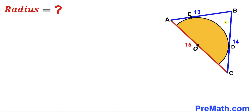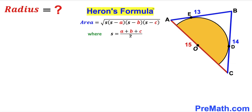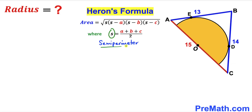Let's focus on triangle ABC. Since all its side lengths have been given to us, we are going to use Heron's formula to calculate the area of triangle ABC. Heron's formula states: area equals the square root of S times (S minus a) times (S minus b) times (S minus c), where S equals (a plus b plus c) divided by 2, and S stands for semi-perimeter.